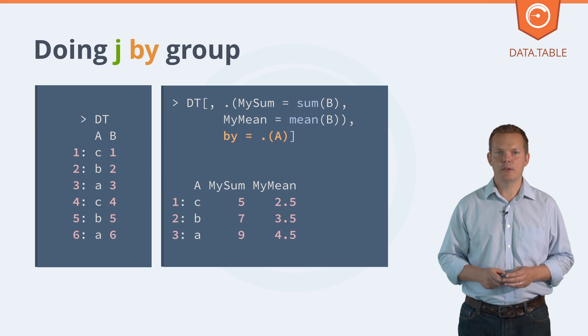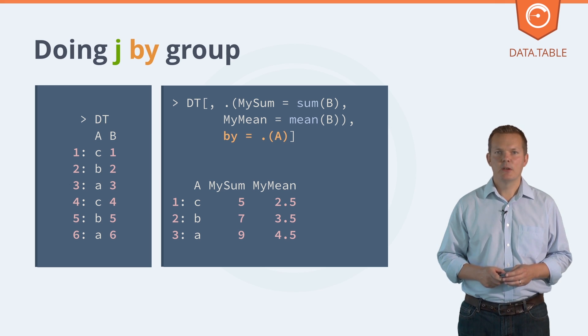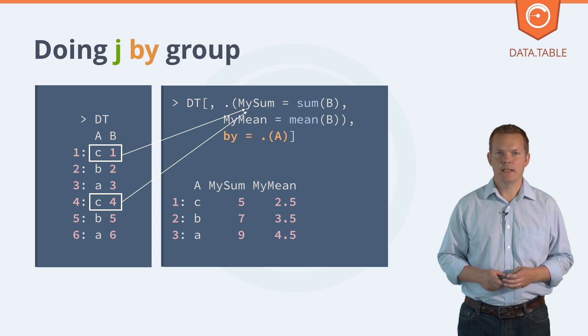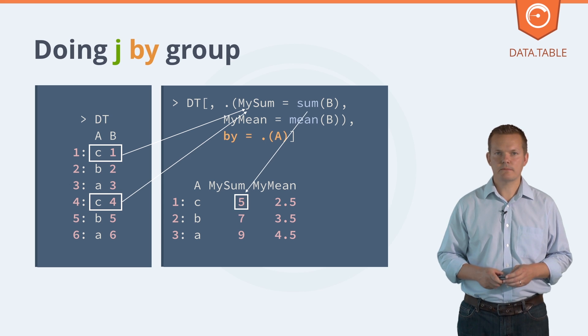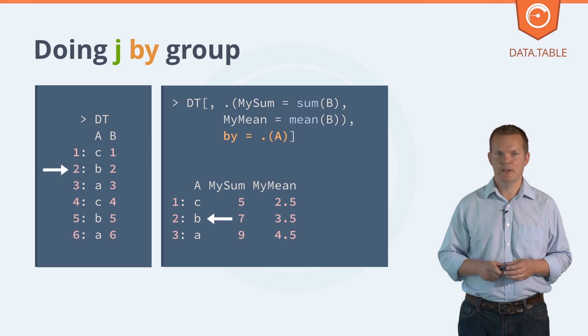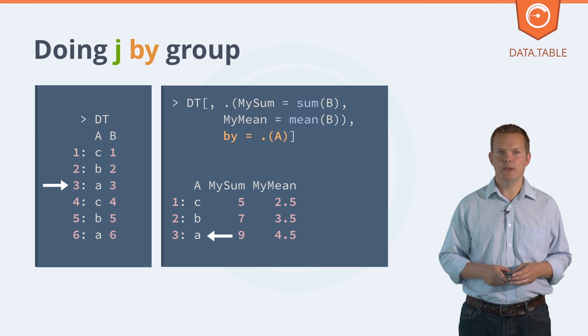We use the dot parenthesis notation once again. In this example, we have the value C occurring first in column A on row 1, and then again on row 4. So we add 1 plus 4, and that gives the answer 5, and that's the answer for the first group. It's very important in data table that the groups are returned in the order that they first appear in the data table.